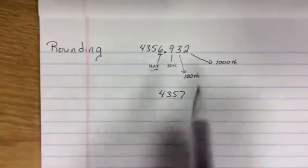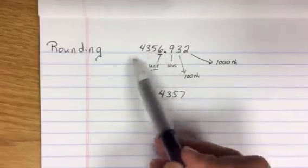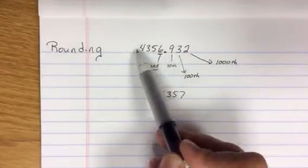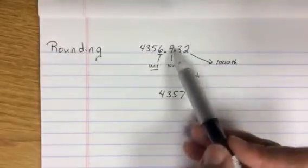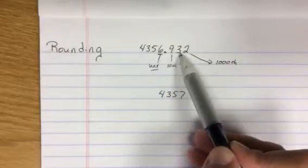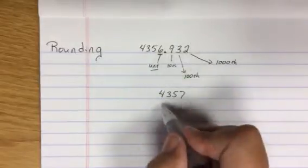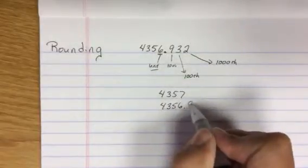If the number to the right is less than five, then the number doesn't change. So in this case, if I said round to the nearest tenth, we look at the tenth, we look at the number behind it. The number behind it is a three. It's less than five. So our answer would be 4356.9.